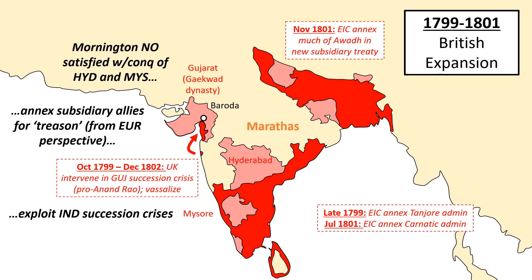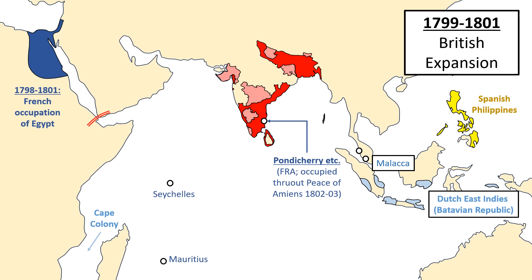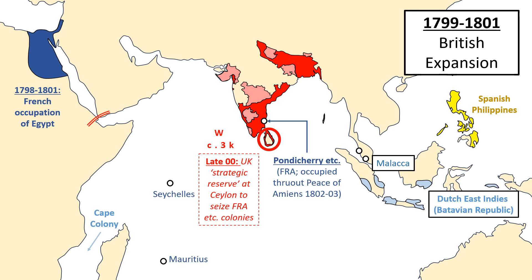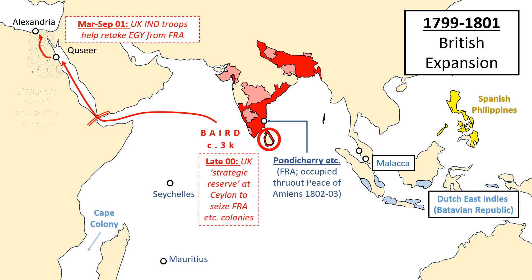Amidst all this subcontinental activity, it can be difficult to remember that Britain was still locked in a broader struggle against revolutionary France, but that war did occasionally intrude into Mornington's plans. Perhaps the most significant episode occurred in late 1800, when Mornington was ordered to send a detachment to the southern island of Ceylon, where it could then operate against French, Spanish and Dutch colonies around the Indian Ocean. This was a low-risk, high-plunder job, and accordingly, Mornington again tried to place his brother Wellington in command. But this time, the payout was too high for the senior commanders to accept this patronage abuse, and Wellington was forced into a humiliating climb-down.